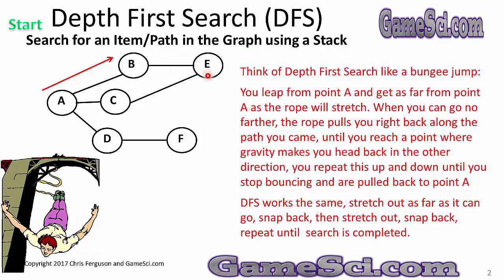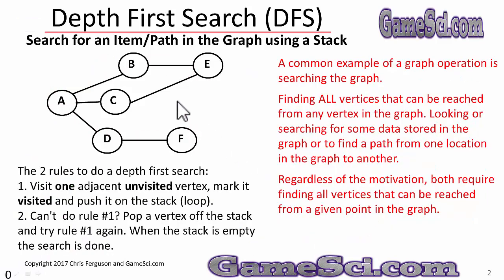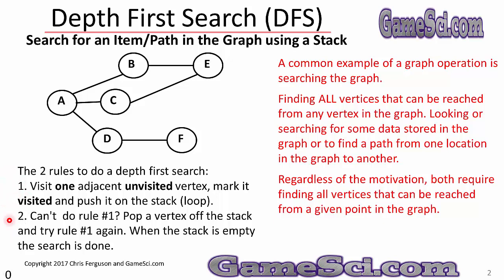DFS searches for an item or path in the graph using a stack. A common example is finding all vertices reachable from any vertex, searching for data stored in the graph, or finding a path from one location to another. Both require finding all vertices reachable from a given point. The two rules: Rule 1 is a loop — visit an unvisited adjacent vertex, push it on the stack, and repeat. When rule 1 fails, drop to rule 2: pop a vertex off the stack and try rule 1 again. When the stack is empty, the search is done.